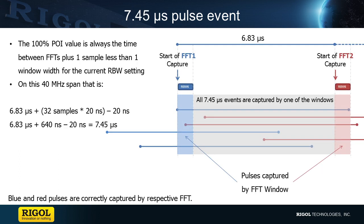Now let's look at the 7.45 microsecond event. This is the POI value, and that's because the POI value is always the time between the FFTs plus one sample less than the window width for the current setting. On this 40 MHz span, that's the 6.83 microsecond time between FFTs plus the 640 nanosecond window minus 20 nanoseconds — so that's 7.45 microseconds.